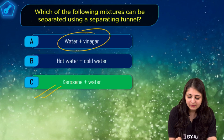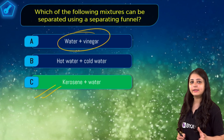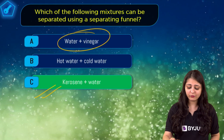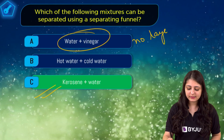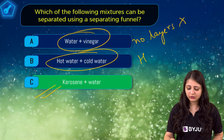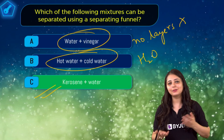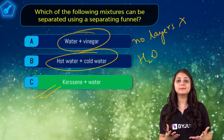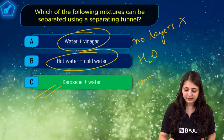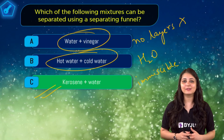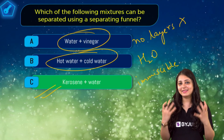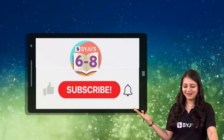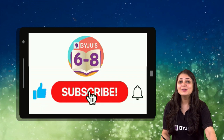Time is up! The correct answer is option C — kerosene plus water. Option A, water plus vinegar, is incorrect because vinegar mixes with water and no layers would be formed. Option B, hot water plus cold water, is nothing but water — same substance. Kerosene and water are immiscible liquids, so they form separate layers and can be separated using a separating funnel.